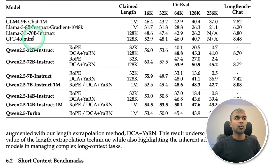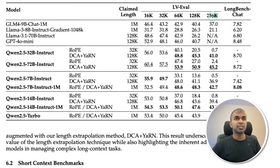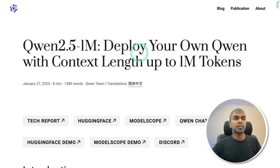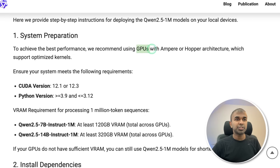It beats Gemini 4o Mini, LLaMA 3.1 7B, and LLaMA 3 8B Instruct when focusing on context length. You can deploy your own Qwen with a context length of up to 1 million tokens if you have a GPU with Ampere or Hopper architecture.